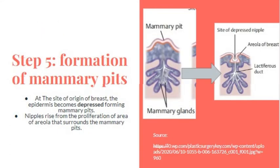Step 5 — formation of mammary pits: at the site of the original breast, in late fetal life, the epidermis becomes depressed and forms mammary pits. Soon after birth, nipples arise from the proliferation of the areola area that surrounds the mammary pits. That is why the nipple of newborns looks depressed and not well formed and elevated.